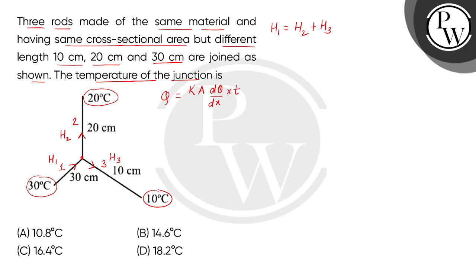अब तीनों rods same material की हैं, तो coefficient of thermal conductivity K same होगा। Area भी same है, लेकिन length different है। Temperature difference अलग-अलग होने के कारण, junction का temperature theta मान लेते हैं।